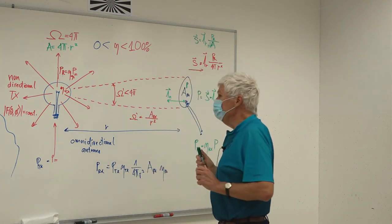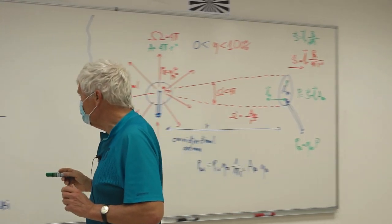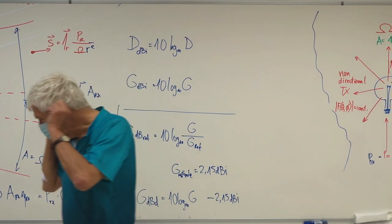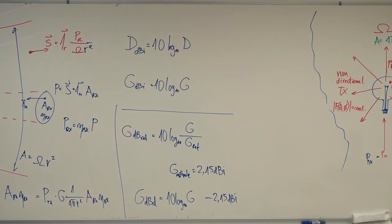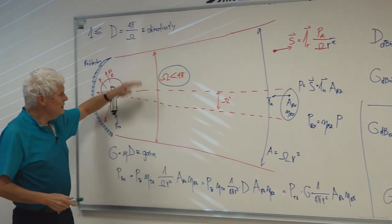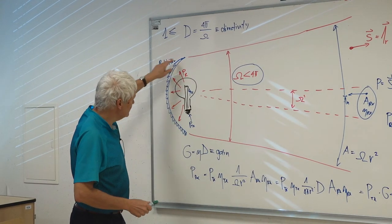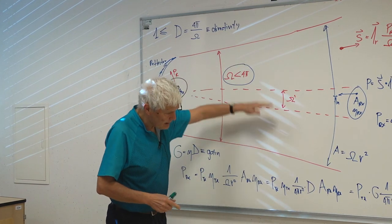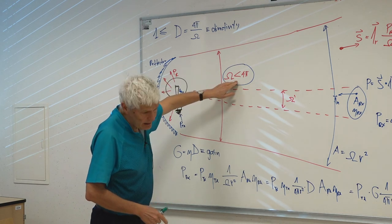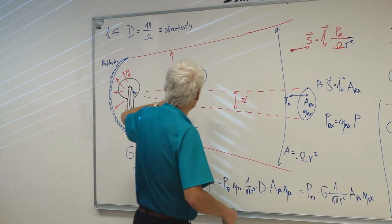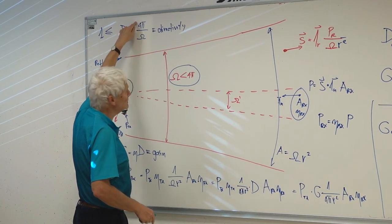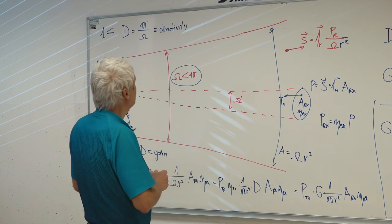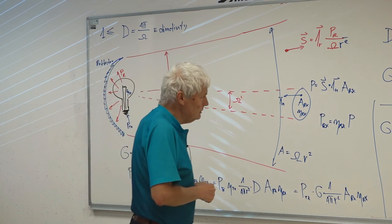Now we saw the simple directional transmitter. The calculation was very easy. If we had a simple spotlight with a reflector, the spotlight does not generate a parallel beam — at large distances this beam always becomes conical. And if we know the solid angle of this beam, the reception improves as much as this solid angle is smaller than the full solid angle 4π. That is very simple to talk about.